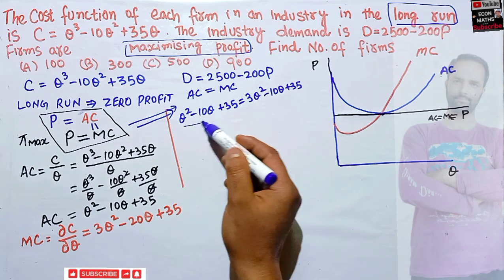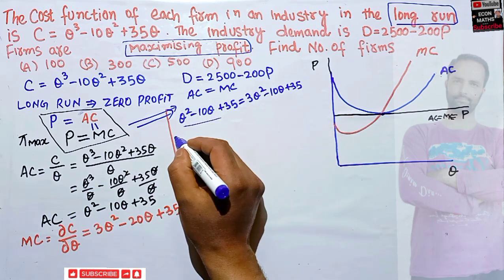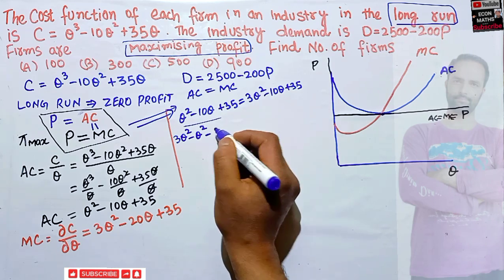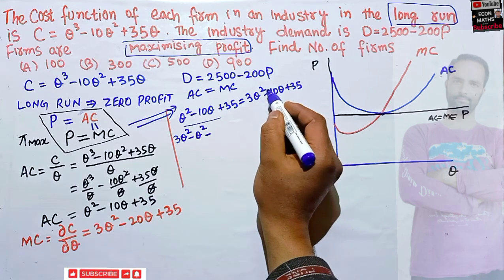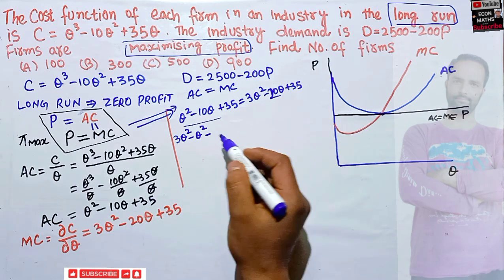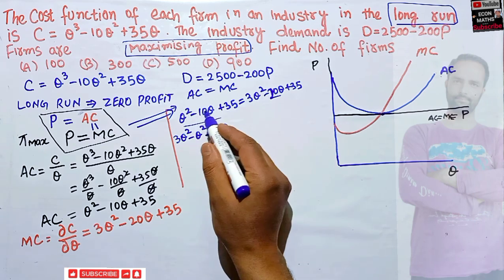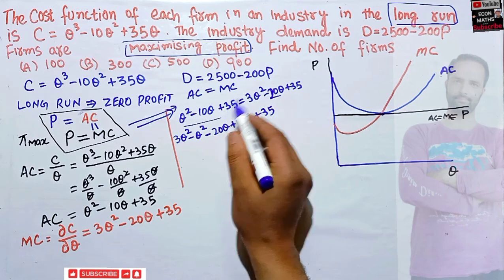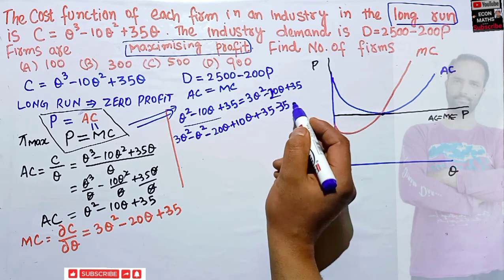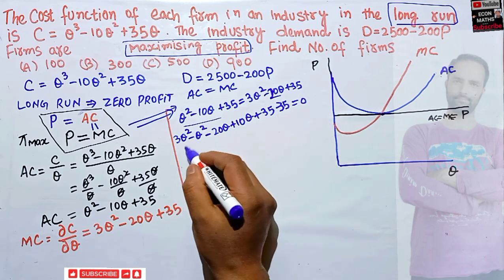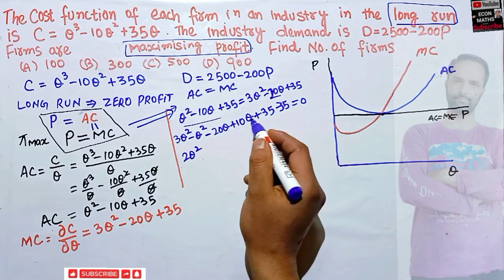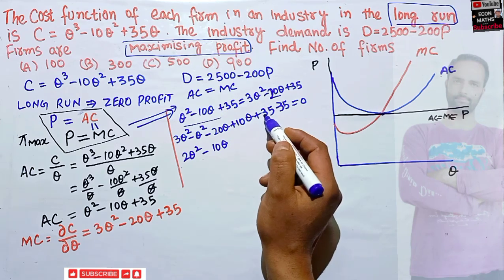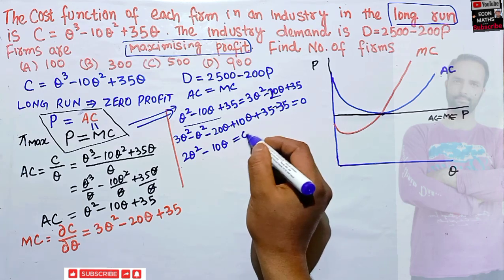Now using the conditions P = AC and P = MC, both equal to price, we can equate AC = MC. So q² - 10q + 35 = 3q² - 20q + 35. Taking all terms to the right-hand side: 3q² - q² - 20q + 10q + 35 - 35 = 0, which gives 2q² - 10q = 0.